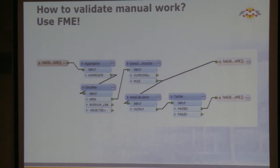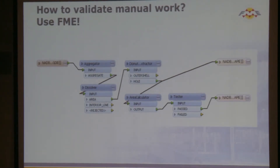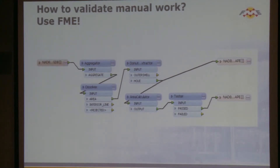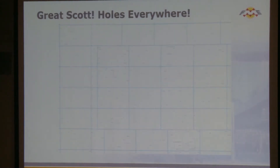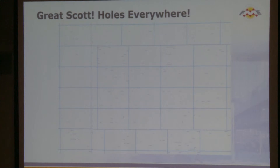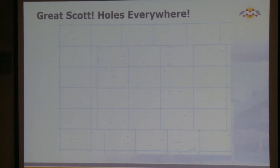So how do we validate their work? We use FME, of course. If we're trying to make it so that there are no null spaces in the grid, we can use FME to do that — now I have a workspace that's 10 transformers or less, which makes me really happy. I aggregate the entire thing together, dissolve it, do a donut extractor because I know there are some large lakes that aren't surveyed, and then I simply go — what's left over? There should be absolutely no holes. Every gray line is a hole. You can see the entire meridian has holes along it, and every township has holes in it. This was pretty close to a worst-case scenario.